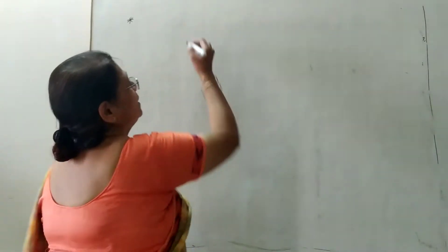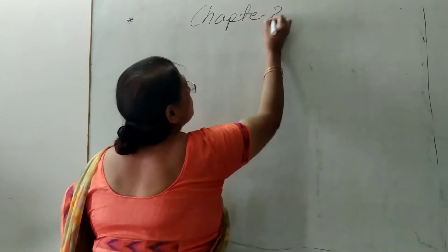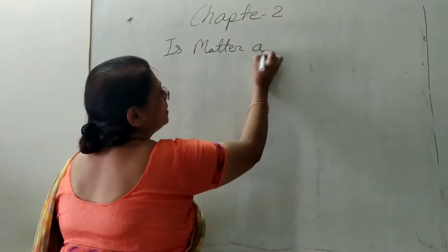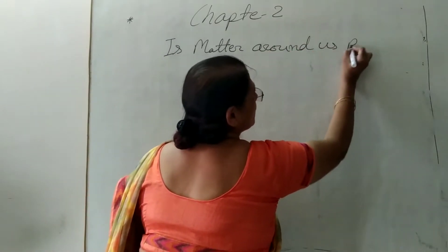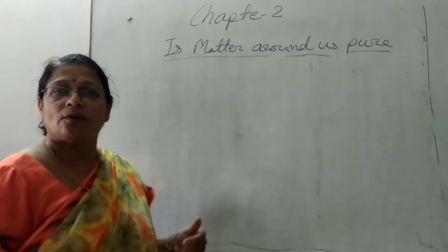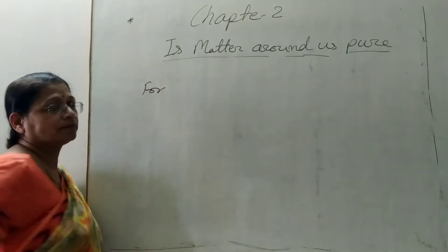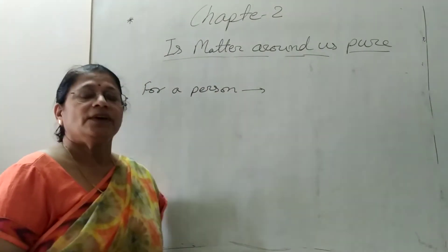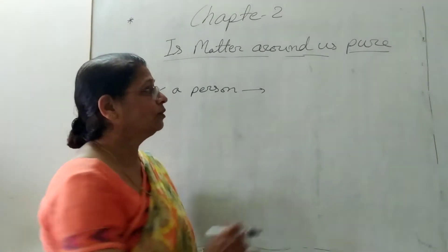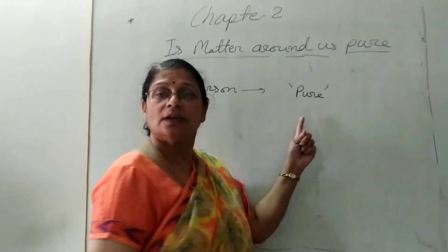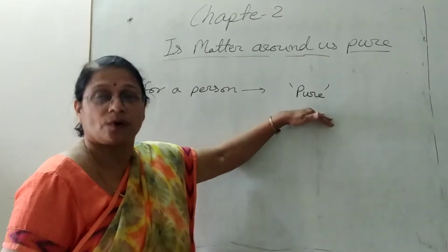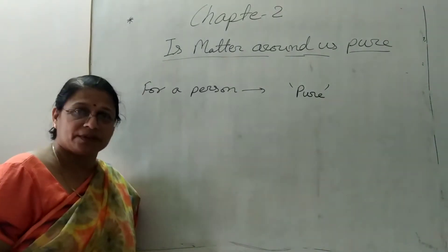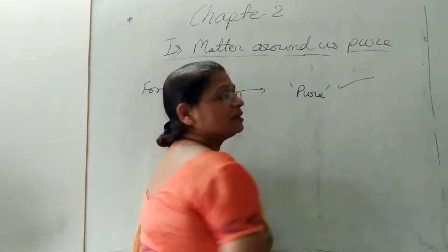Now we will go for Chapter Number Two. Chapter two is 'Matter Around Us Pure.' On edible product packets we have clearly seen the word 'pure' written — pure milk, pure ghee, like this. So in the view of a simple person, that substance is considered as pure.